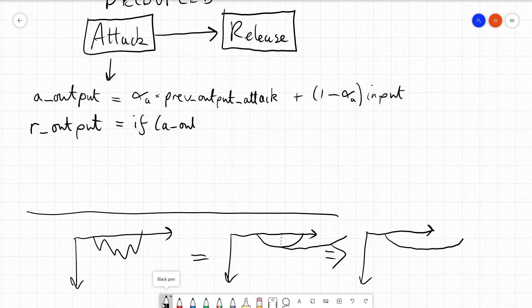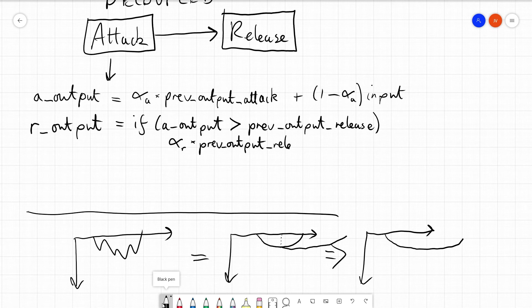And then release output says, if the attack output, so remember we're using the output from the attack module as input, is larger than the previous release output, then we need to smooth it, because increase in gain is the release stage. So we do alpha release times the previous release output, plus 1 minus alpha release times the attack output. Otherwise, if we're attacking, we simply give the output from the attack stage.